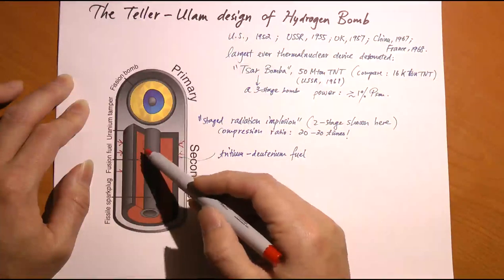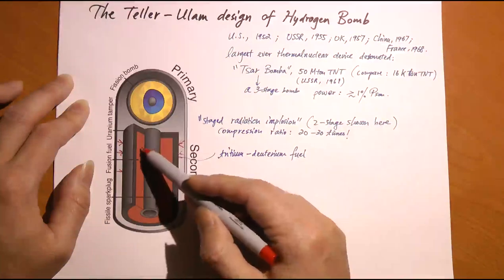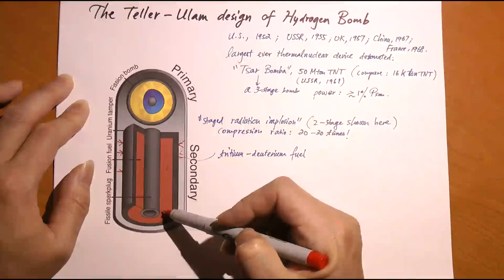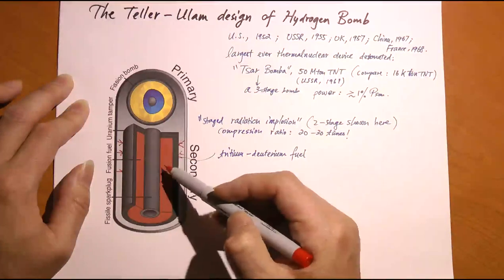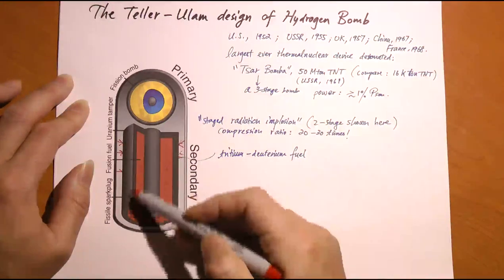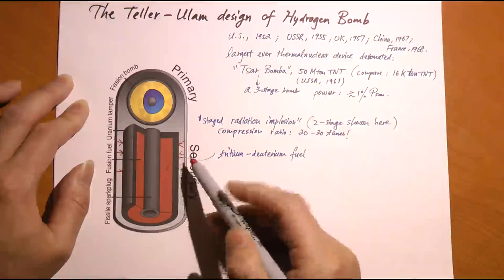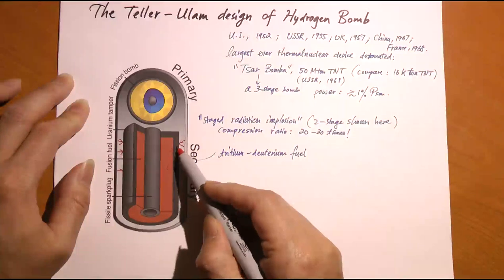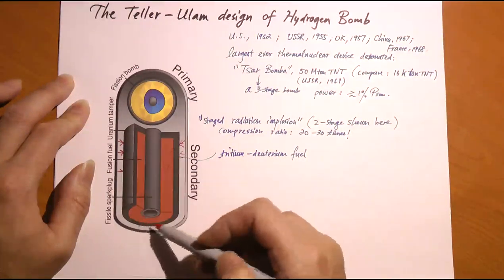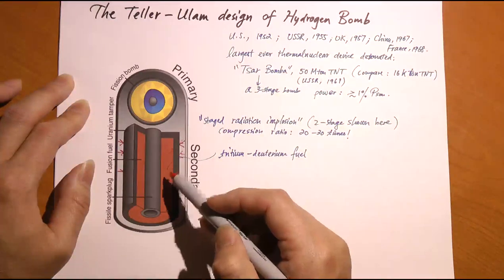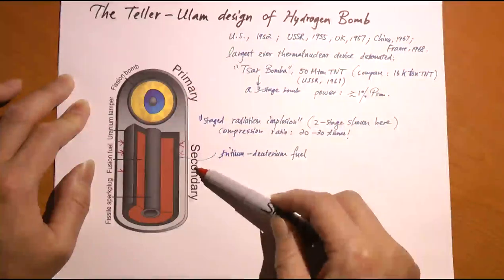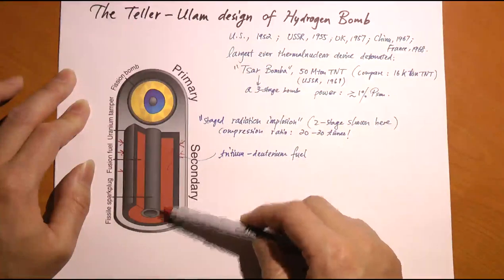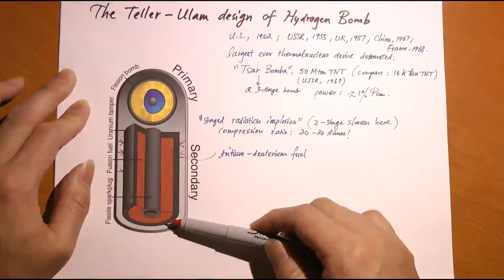The enormous temperature created by the fission explosion then causes fusion to take place in the secondary stage. The outer casing is called a pusher because it pushes inward, and a tamper because neutrons emitted in the reaction get trapped and partially reflected, causing more fusion events. This is a two-stage design—primary fission, secondary fusion. The Russian Tsar Bomba was a three-stage bomb: the second stage ignites a third, even larger fusion stage, enabling its record-breaking yield.